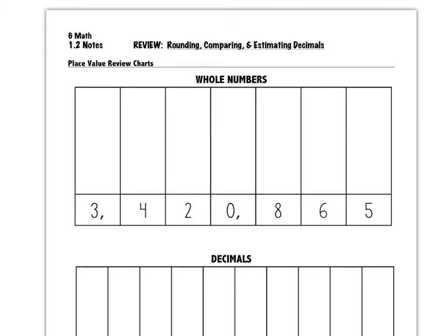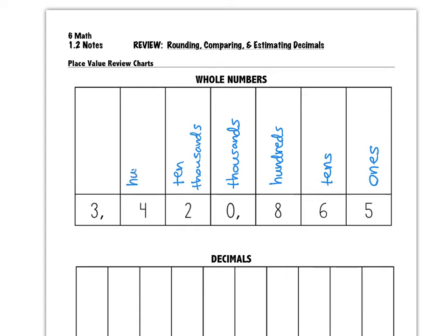The first thing I want to look at is a review of your place value charts. In the last video we talked about how to add, subtract, multiply, and divide whole numbers. So just as a review, here are the place values for whole numbers. The digit furthest to the right is what we call the ones or units digit. Moving to the left we have the tens, hundreds, thousands, ten thousands, hundred thousands, and millions. And we could keep going and going if we wanted to.